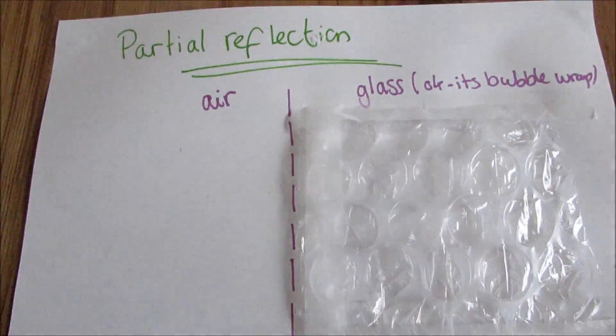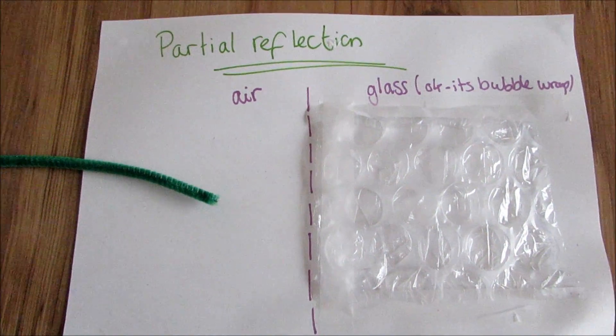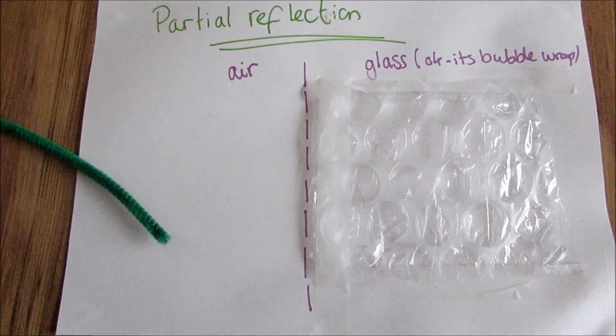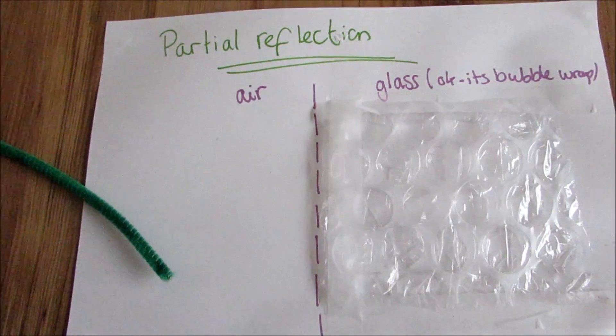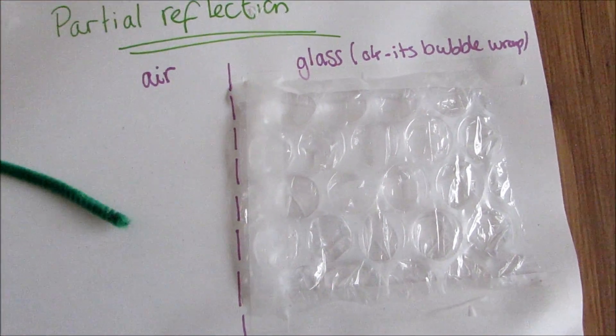We need to look at how... Primrose is currently playing with my props. How sound changes when it hits a boundary. This is what is called partial reflection. This is the air.